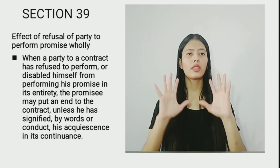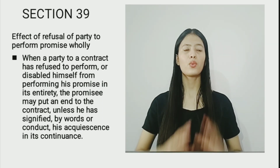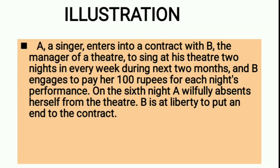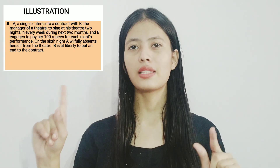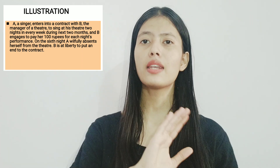Let us understand Section 39 with an illustration as mentioned in the Act. According to the illustration, A is a singer and B is the manager of a theatre. A contracts with B to sing for two nights every week for two months, for which B will pay A one hundred rupees.